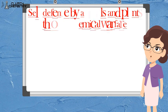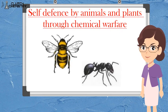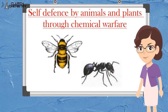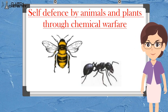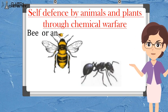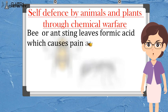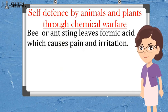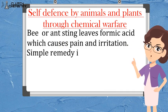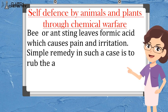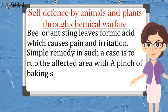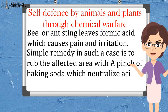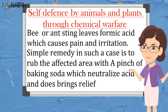Now students, if a person is stung by a honeybee or an ant, they experience pain and irritation. Why? Because their sting contains formic acid. So there is a simple remedy: take a little baking soda and apply it to the affected part — it will neutralize the acid and the person will get relief.